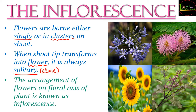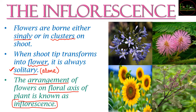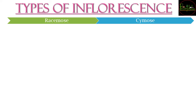But when there is an arrangement of many flowers accumulating together and arranging themselves in some manner on the floral axis, it gets a new name called inflorescence. So if a single flower grows on the floral meristem it is a solitary flower, but if many flowers arrange themselves on the floral axis, it is called inflorescence.